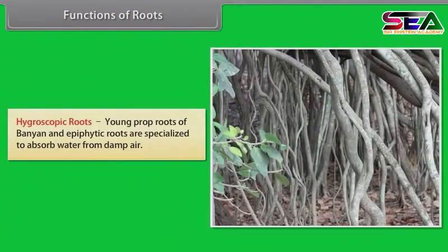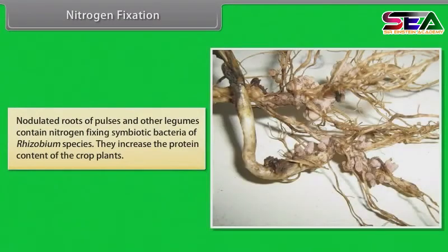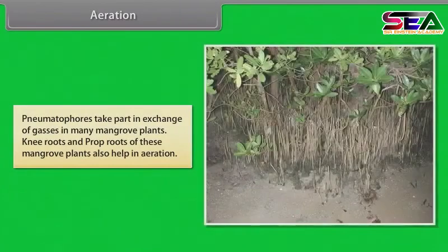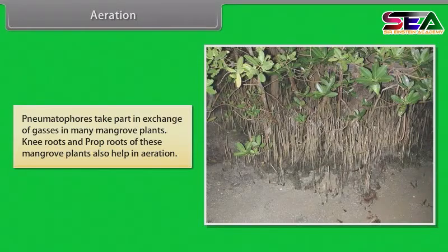Hygroscopic roots: young prop roots of banyan and epiphytic roots are specialized to absorb water from damp air. Nitrogen fixation: nodulated roots of pulses and other legumes contain nitrogen-fixing symbiotic bacteria of Rhizobium species; they increase the protein content of the crop plants. Aeration: pneumatophores take part in exchange of gases in many mangrove plants; knee roots and prop roots of these mangrove plants also help in aeration.